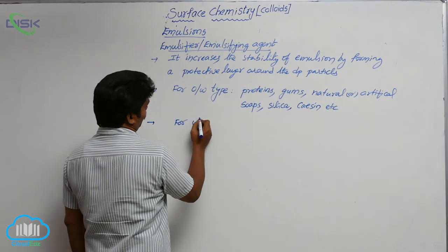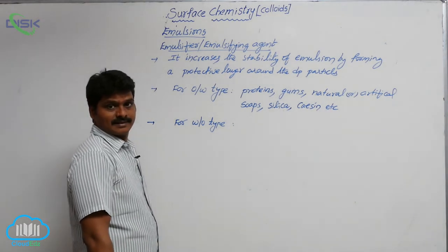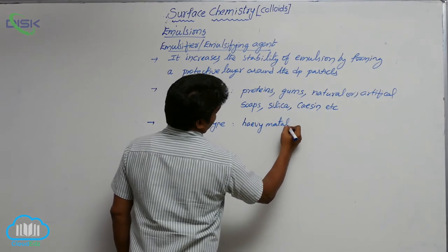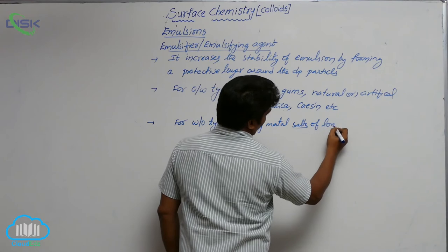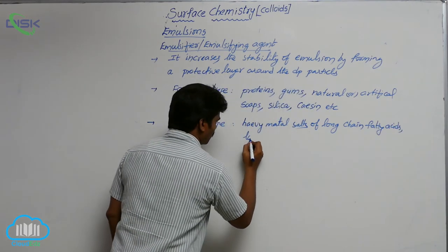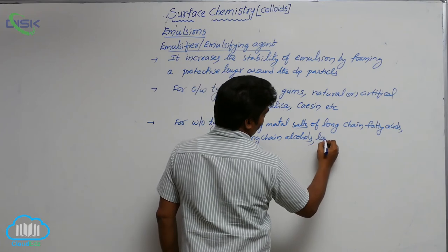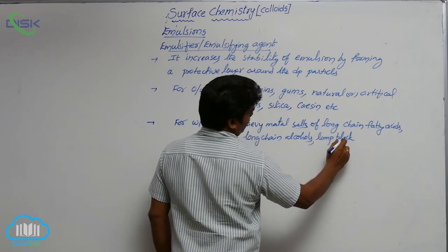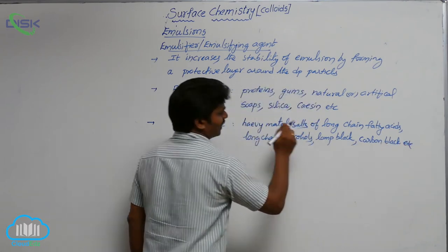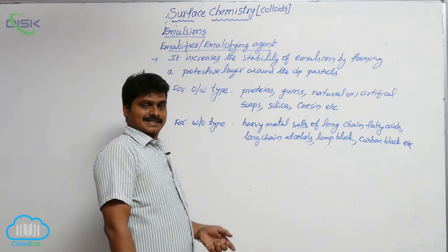Similarly, for water in oil type emulsions, the emulsifying agents used are heavy metal salts of long chain fatty acids, long chain alcohols, lamp black, and carbon black. Lamp black and carbon black are amorphous forms of carbon. These act as emulsifiers in the second kind of emulsions.